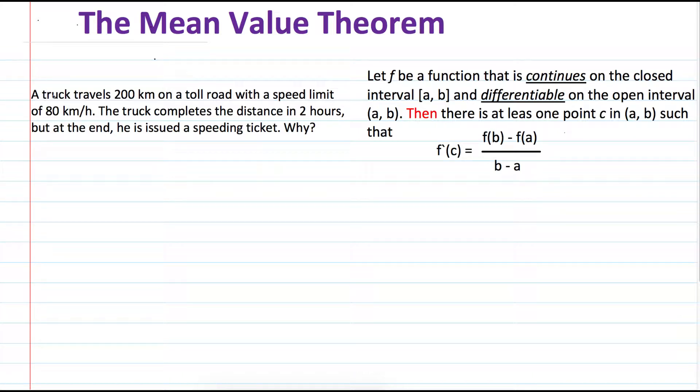Suppose we have a truck that travels 200 kilometers on a toll road with a speed limit of 80 kilometers per hour. The truck completes the distance in two hours, but at the end, he's issued a speeding ticket. Why is that?